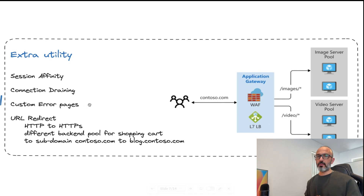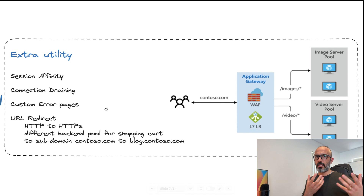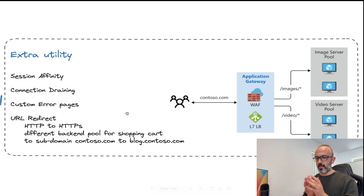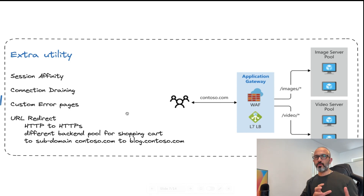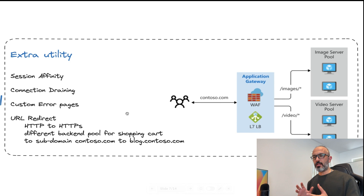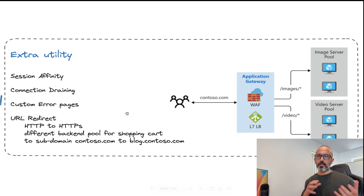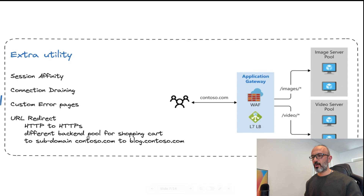You can also configure custom URL pages and URL redirects. For example, if you want to redirect users from HTTP to HTTPS, or if you've built your logic into multiple virtual machines where you want the client, when they check out, to be forwarded to a different virtual machine so that payment and checkout are handled separately. You can also redirect users from a domain to a subdomain — for example, from contoso.com to blog.contoso.com.